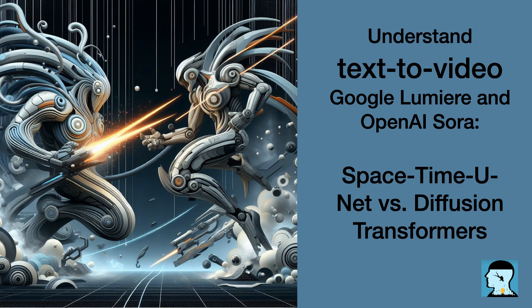When it comes to creating amazing videos from text, the space-time unit in Lumiere helps by ensuring that all the movement in the video looks natural and connected. This means that when a character moves or an object changes place, it happens in a way that makes sense, just like in real life, enhancing the overall quality and making the video more realistic and engaging. On the other hand, the Diffusion Transformers in Sora bring diversity and complexity to the videos. By putting together different pieces of the story gradually, these Transformers can handle a wide range of visual information, making the videos more versatile and rich in detail. In simple terms, the space-time unit in Lumiere ensures smooth and realistic movement throughout the video, while the Diffusion Transformers in Sora add complexity and richness to the visual details, making the videos more engaging and exciting to watch.